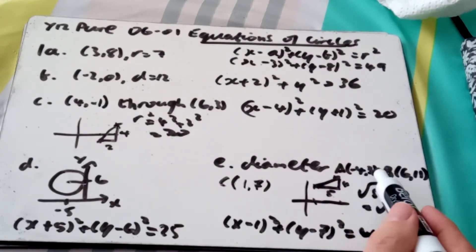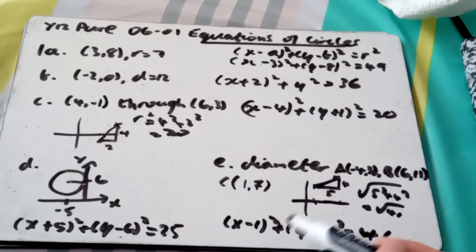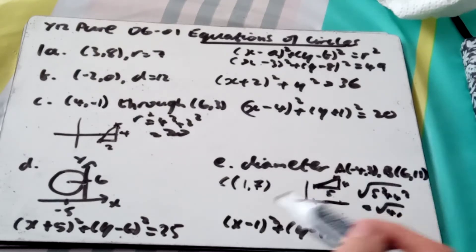I can check it by putting in the points A and B, both points should satisfy it. So I'm going to get (-4 - 1)² = 5² and (3 - 7)² = 4², which is fine. And (6, 11) gives me 5² and 4² as well, so it's verifiable.